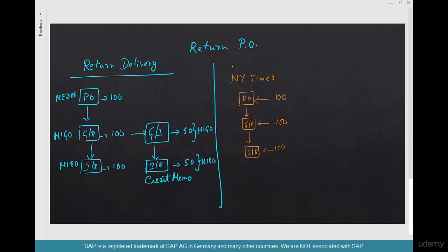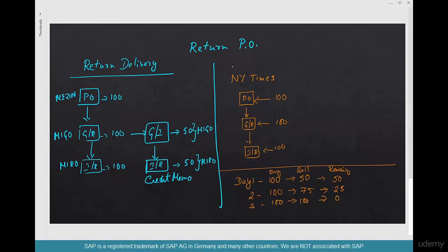The industry works differently for these goods — newspapers are delivered in 100 quantity, and if you only sell 50, they take the remaining 50 back and give you money for them. For example, on Day 1 you buy 100, sell 50, remaining is 50. Day 2 you sell 75, remaining 25. Day 3 sell 100, remaining zero. Day 4 sell 60, remaining 40.